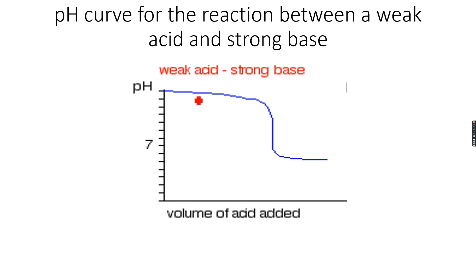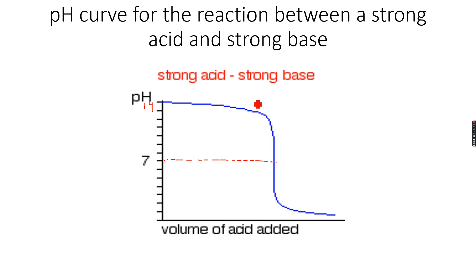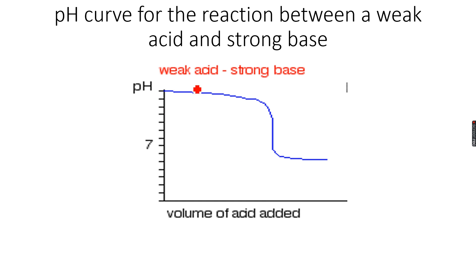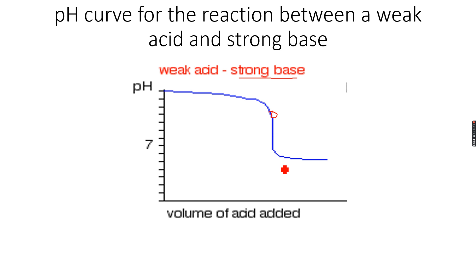Now for a weak acid and strong base: I have the same strong base as in the first case, but now I have a weak acid. I start from a high pH again, and there will be no significant change initially because the amount of base is stoichiometrically more than the amount of acid. But at a certain point, there will be enough acid to neutralize all the base, causing a sudden dip in pH, after which the base will be neutralized.